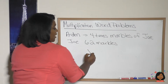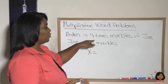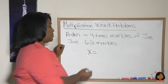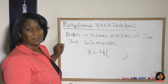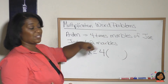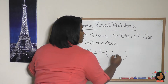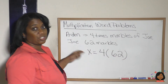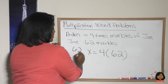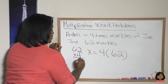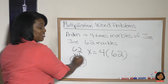We don't know how much Aiden has — that's X, that's what we're trying to find out. But we do know that it's four times, and we're going to put parentheses for what we're about to multiply times the amount that Joe has. Joe has 62 marbles. So all we have to do is 62 times four. That'll find our answer. That is 248 marbles — that's your answer.